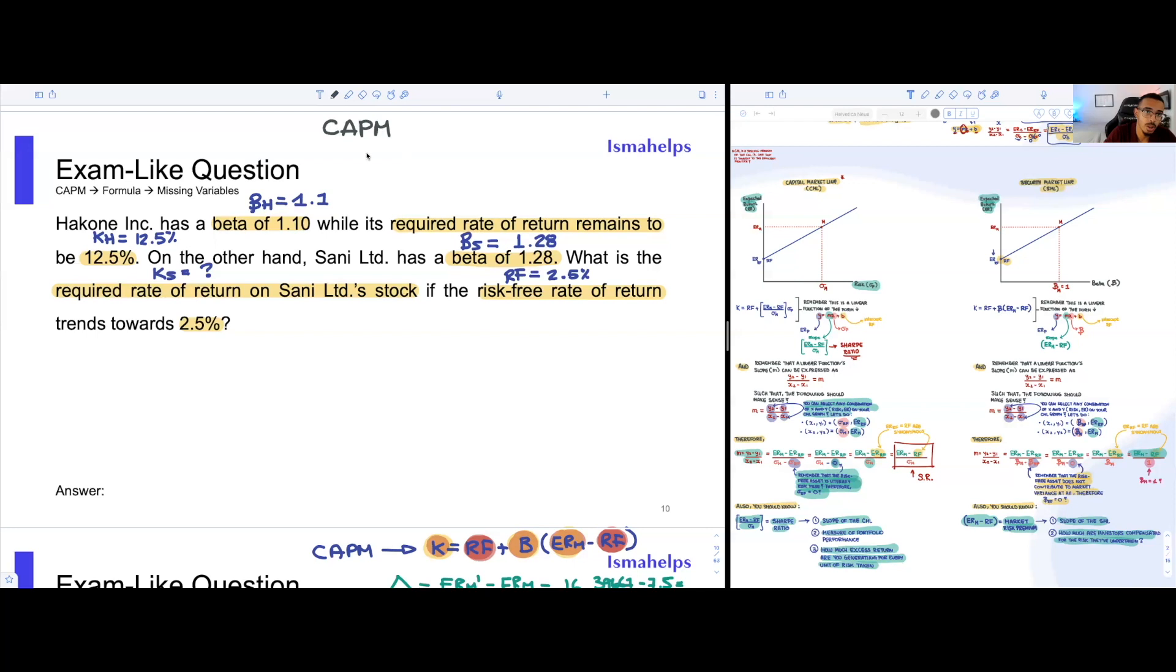There's actually a quick and easy trick that you could use to identify all of the parameters you have right now that are useful and all the parameters that you're missing. It's as simple as using your formula sheet. On the right, we notice we have our CAPM formula for the SML. It's literally written in front of us.